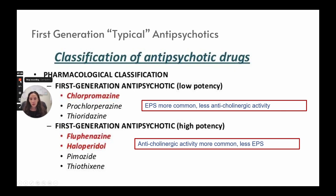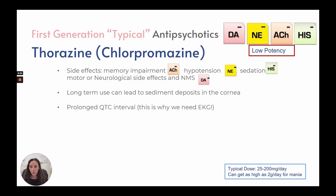First generation typical antipsychotics have two classifications. Low potency has more extrapyramidal side effects but less anticholinergic activity — seen with chlorpromazine. High potency has more anticholinergic activity but fewer extrapyramidal side effects — seen with fluphenazine and haloperidol. Thorazine is a low-potency first-generation antipsychotic affecting dopamine, norepinephrine, acetylcholine, and histamine as an antagonist — reducing all of them.